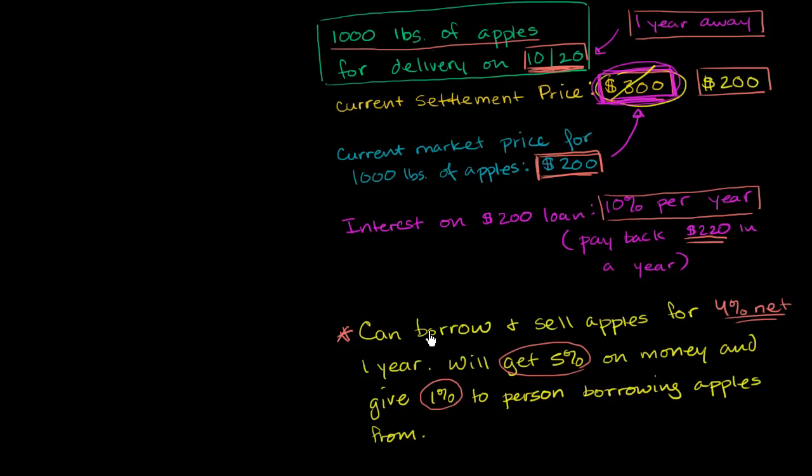So given this reality, what could I do, once again, to make a risk-free profit? Well, as you can imagine, I can borrow and sell the apples for a year. So let me write this down. I'm going to borrow and sell 1,000 pounds of apples. So if I just borrow it today and sell it, today's market price is $200 for 1,000 pounds. So I'm going to get $200.